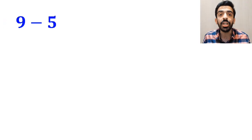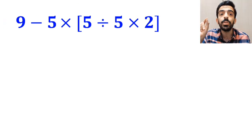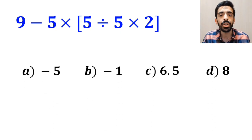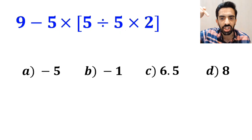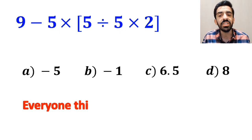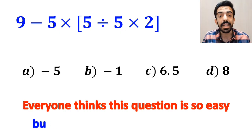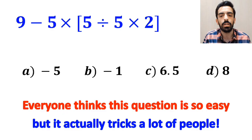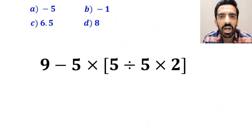What is the value of the expression 9 minus 5 times open bracket 5 divided by 5 times 2 close bracket? Which option do you think is the correct answer to this question? Everyone thinks this question is so easy, but it actually tricks a lot of people. Let's break it down and solve it together.